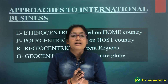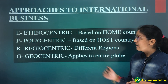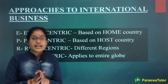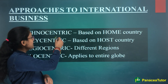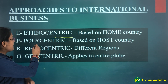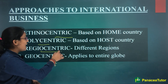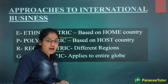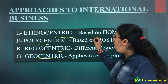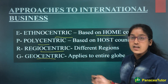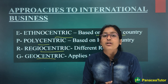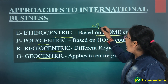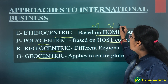Ab hum discuss karne ja rahe hain Approaches to International Trade. Iske liye bahut simple sa formula hai, that is the EPRG model. E stands for Ethnocentric, P stands for Polycentric. Ethnocentric approach kehti hai humne apni home country ko pehle preference deni hai. Polycentric approach kehti hai humne host country ko pehle preference deni hai — example MNC.